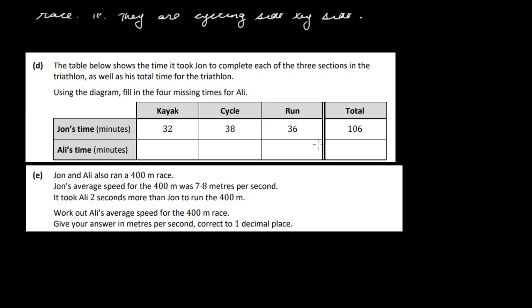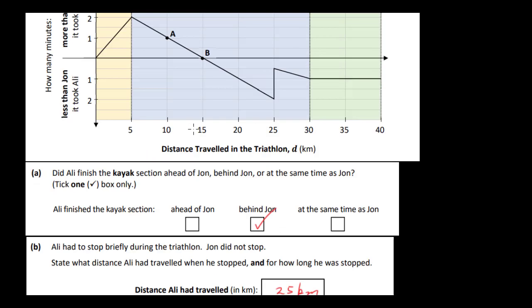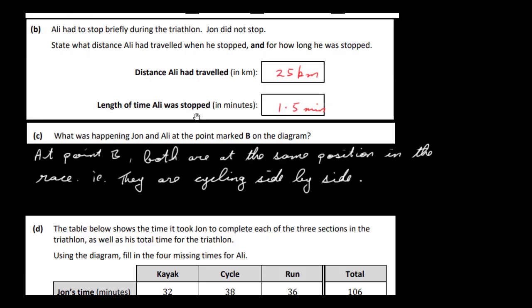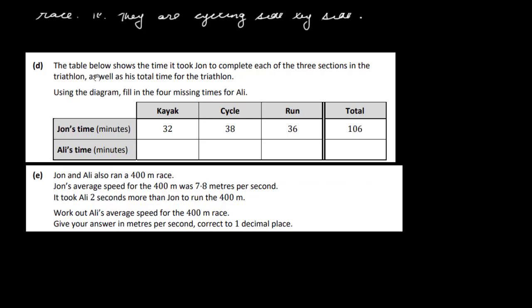The table below shows the time it took John to complete each of the three sections in the triathlon, as well as the total time for the triathlon. Using the diagram, fill in the four missing times for Ali. OK, so let's have a look at the kayak section first. So if we look at the kayak section here, we can see that after five kilometers, the end of the kayak section, Ali is two minutes behind John. So it has taken Ali two minutes more than John. So that means this is going to be 34.